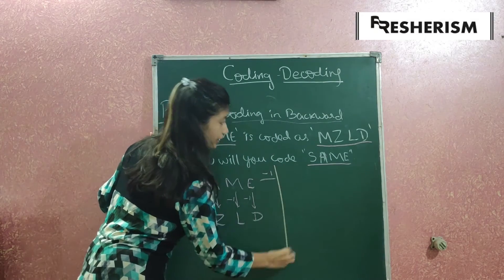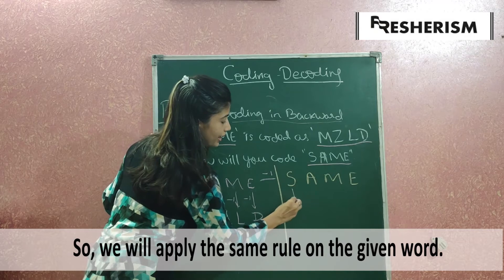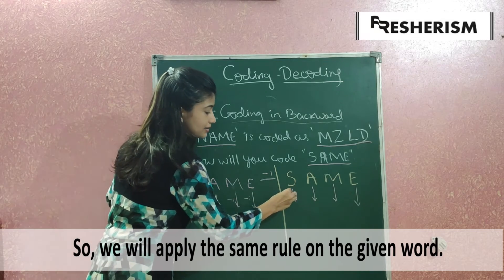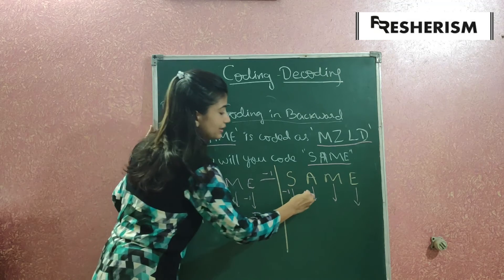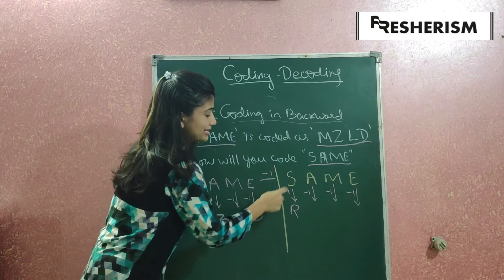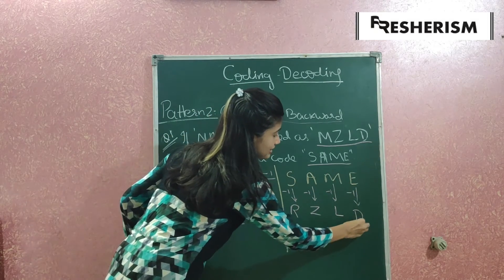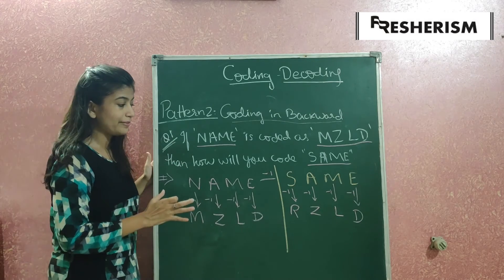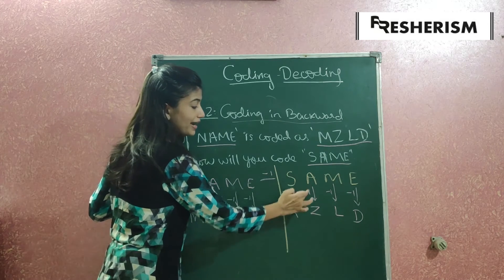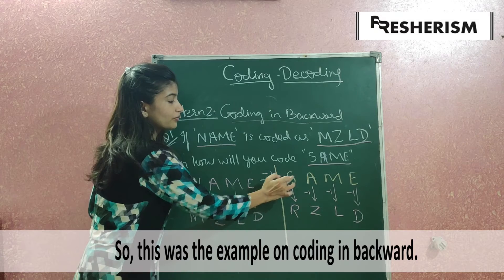Apply the same minus 1 rule to the word S-A-M-E. Put the downward arrow and apply minus 1 to each letter: S minus 1 is R, A minus 1 is Z, M minus 1 is L, and E minus 1 is D. So the code for 'same' is R-Z-L-D. This was the example of coding in backward sequence.